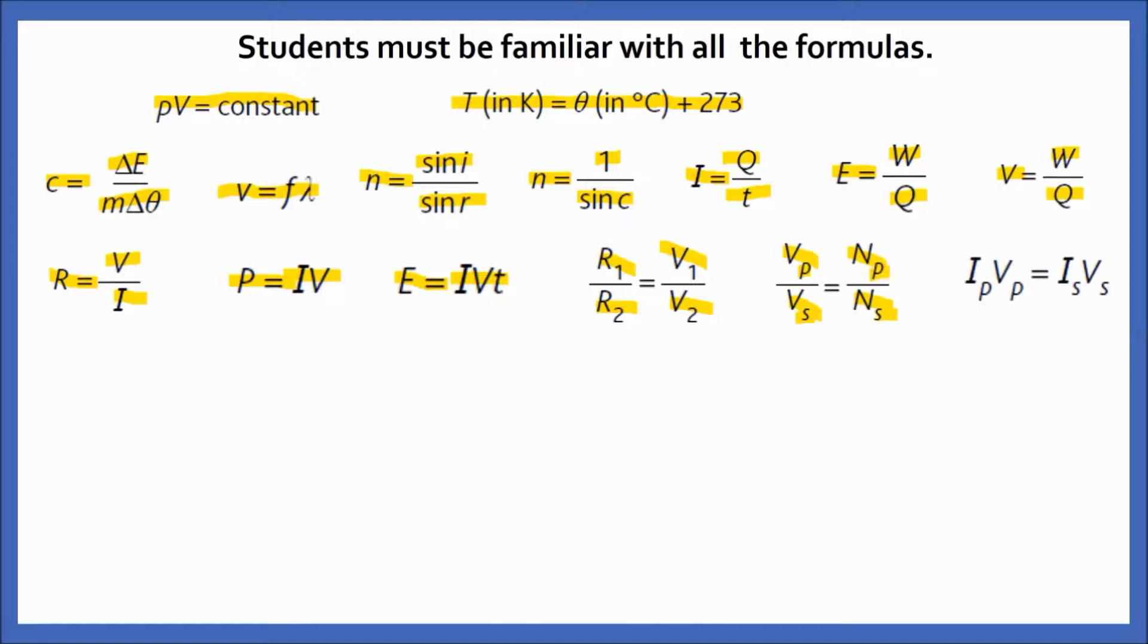Another transformer equation in terms of power: IpVp = IsVs for primary and secondary coil. Here is the power loss equation: P = I²R. The radioactivity equation, that is nuclear notation: X is an element, A stands for mass number or nucleon number, and Z stands for atomic number or proton number.